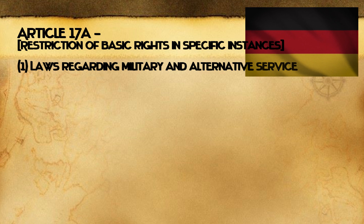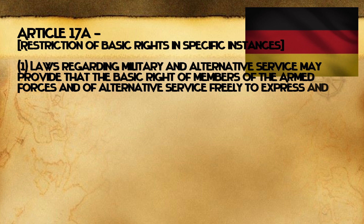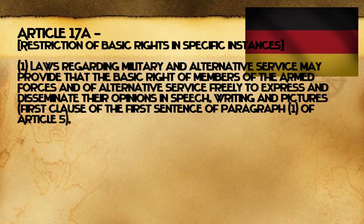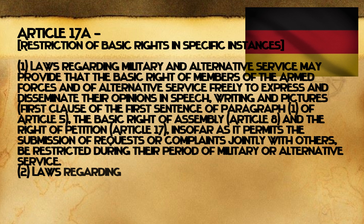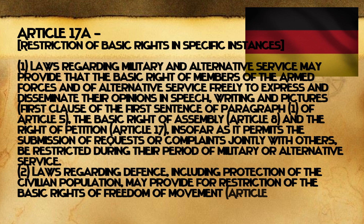So first we have Article 17a — restriction of basic rights in specific instances, having to do with military service. "Laws regarding military and alternative service may provide that the basic right of members of the armed forces and of alternative service freely to express and disseminate their opinions in speech, writing and pictures (first clause of the first sentence of Paragraph 1 of Article 5), the basic right of assembly (Article 8), and the right of petition (Article 17), insofar as it permits the submission of requests or complaints jointly with others, be restricted during their period of military or alternative service. And laws regarding defense, including protection of civilian population, may provide for restriction of basic rights of freedom of movement (Article 11) and inviolability of the home (Article 13)."